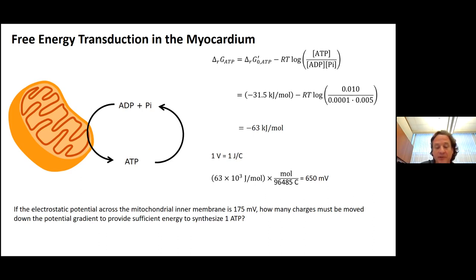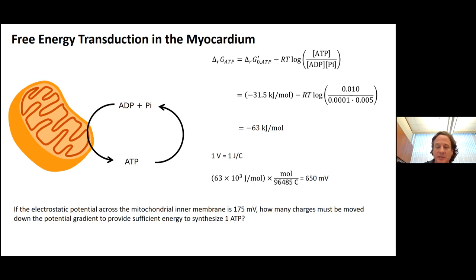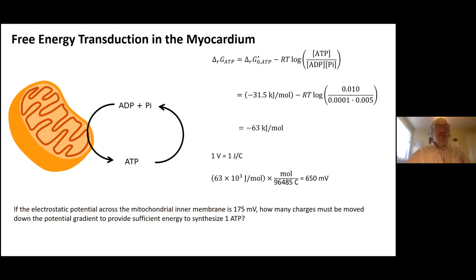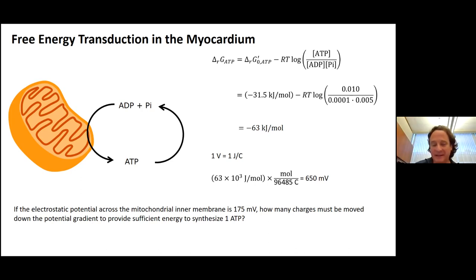We can do a fun calculation with 650 millivolts. If the electrostatic potential across the mitochondrial inner membrane is 175 millivolts — a reasonable, measurable number — how many charges must be moved down the potential gradient to provide sufficient energy to synthesize one ATP at this hydrolysis potential? I'm assuming a steady state where the 175 millivolts is maintained by the electron transport chain.